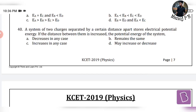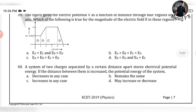40th question: The system's potential energy — it may increase or decrease. The answer is Option D. All the best for your physics. Thank you so much for your love and support. Let me know in the comments below. Thanks for watching. Happy learning.